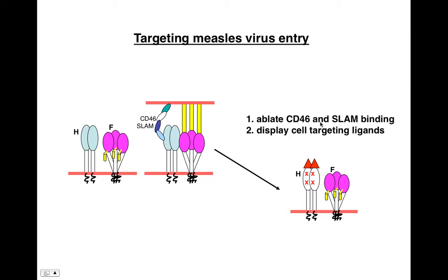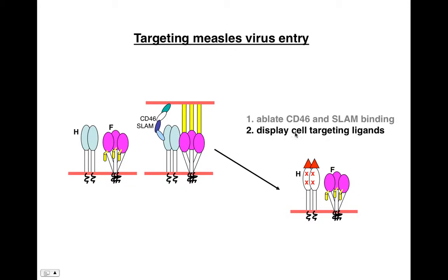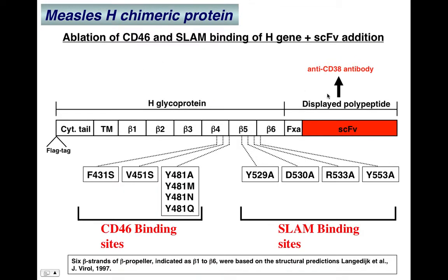To retarget entry, you stop the virus from binding CD46 and SLAM and instead display cell-targeting ligands. You can ablate CD46 and SLAM tropisms by mutagenesis: on the H surface, you can change residues to alanine to identify their function and then eliminate that binding. You need multiple mutations; otherwise the wild-type virus will revert back to normal. The CD46-ablating mutations and SLAM-ablating mutations are distinct sets.